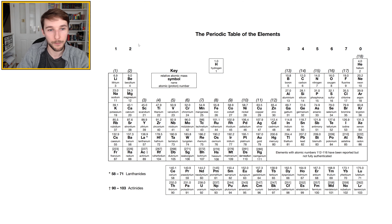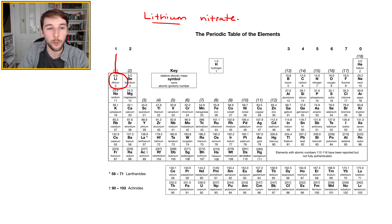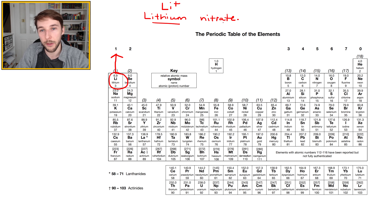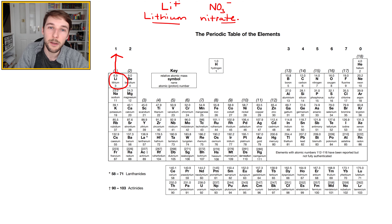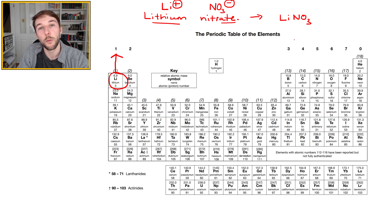Now let's incorporate compound ions into chemical formulae. Lithium nitrate: lithium is in group 1, so it's Li+. Nitrate is a compound ion — NO3−. Lithium has 1+ and nitrate has 1−, so the charges are already balanced in a 1:1 ratio. The formula is simply LiNO3.